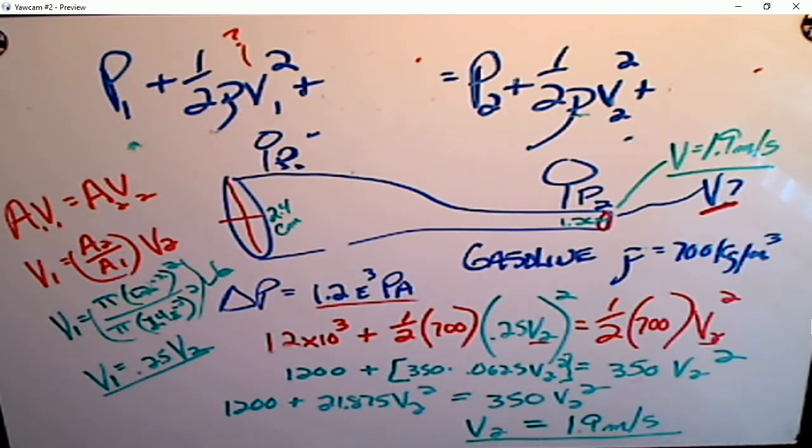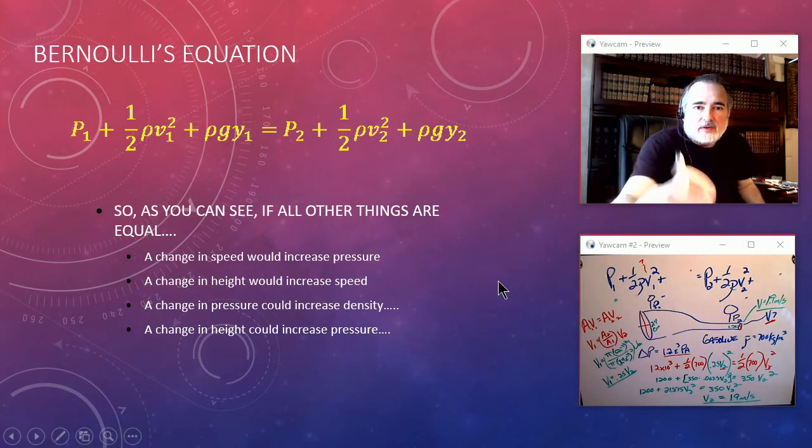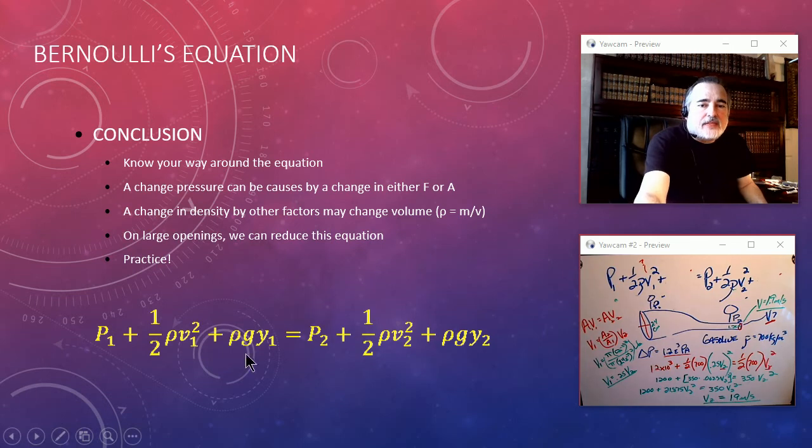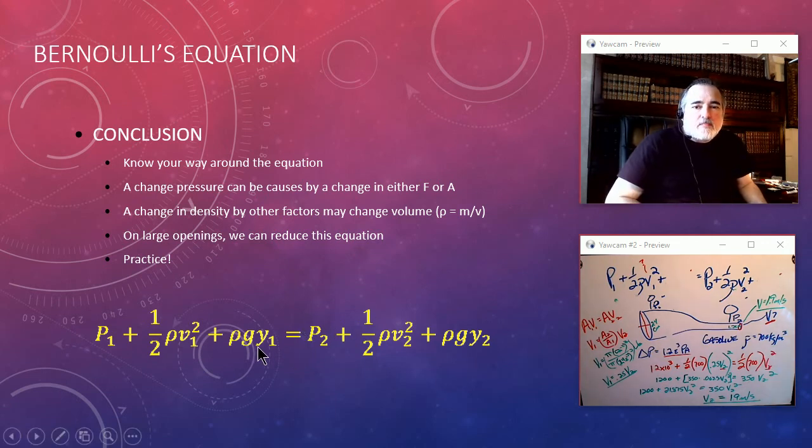So if you're looking at Bernoulli's equation, it's going to take some thinking, right? You look at this equation, you need to know your way around that equation. Obviously, if we're at the same height, you don't have to worry about these two—they would cancel each other out. Density, though, may change depending on what fluid you have. Pressure between two given areas might change. If it's at a different height, of course you have to take that into account. And as we did in our example, we use the equation of continuity to get a relationship between velocity and solving simultaneous equations.